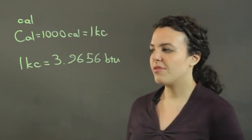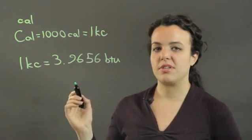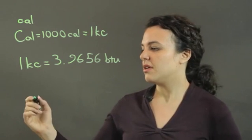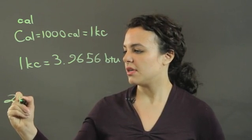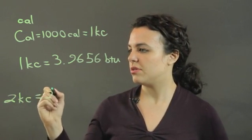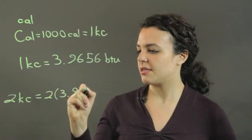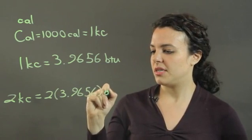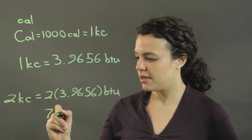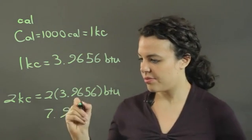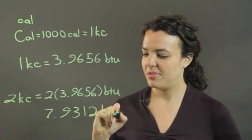So for however many kilocalories I have, I just multiply them by this number to get my BTU. So let's say I have 2 kilocalories. So 2 kilocalories is equal to 2 times 3.9656 BTU, which comes out to 7.9312, when you do the math, BTU.